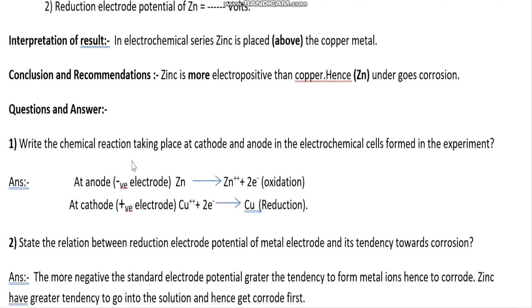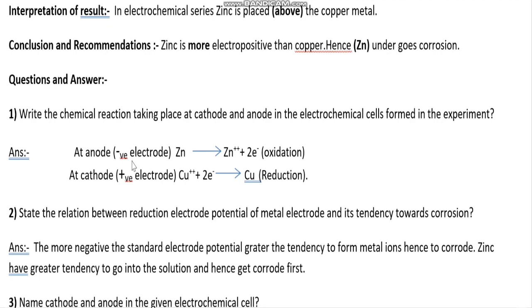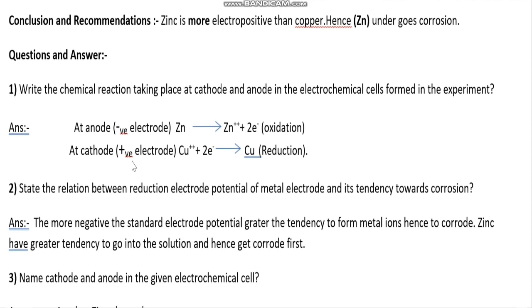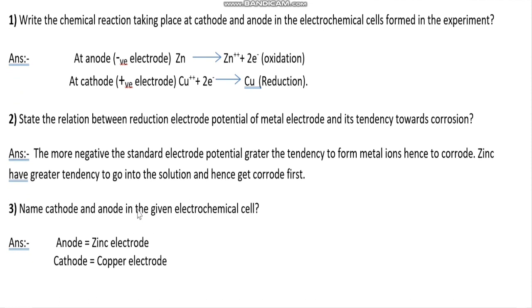Question and answer: write the chemical reactions taking place at cathode and anode in the electrochemical cell formed in the experiment. At anode there is oxidation — zinc loses electrons. At cathode, copper accepts electrons and gets reduced. State the relation between reduction electrode potential of a metal electrode and its tendency towards corrosion: the more negative the standard electrode potential, the greater is the tendency to form metal ions and hence to corrode. Zinc has a greater tendency to go into solution and hence gets corroded first.